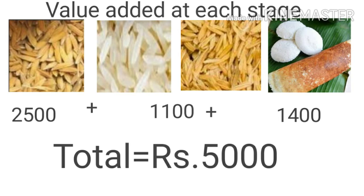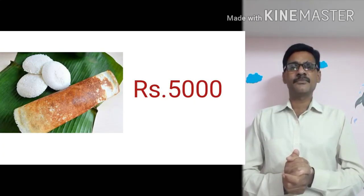Finally: Stage 1 value is 2,500, Stage 2 value added is 1,100, and Stage 3 value added is 1,400. Adding these together equals 5,000 rupees. This is one way of counting the GDP.